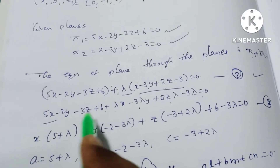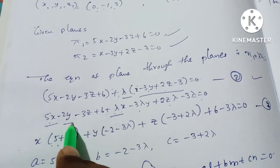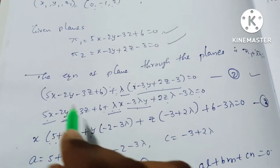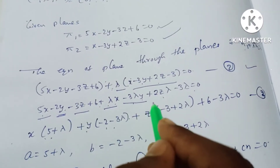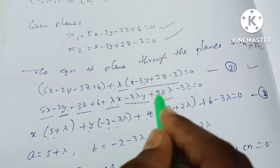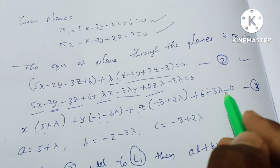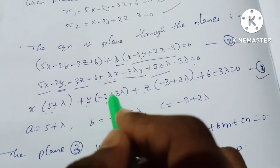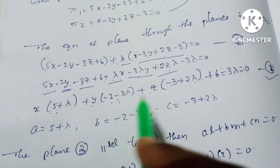From the plane equations: x coefficient gives a = 5 + λ, the y term gives -2y = -3λ so b = -2 - 3λ, and the z term gives -3z = 2λ so c = -3 + 2λ. These are the a, b, c values.